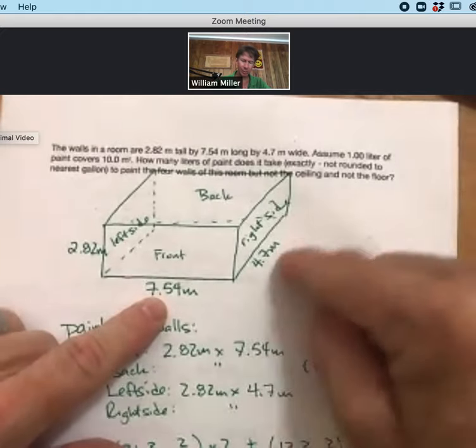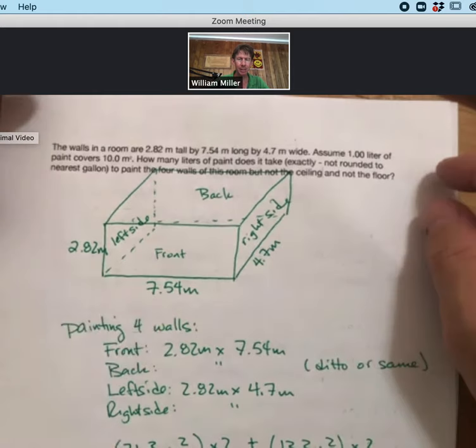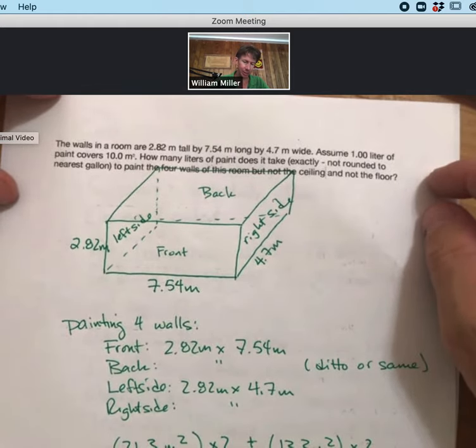long by 4.7 meters wide. So those are our three dimensions. Assume one liter of paint covers 10.0 meters squared. How many liters of paint does it take?